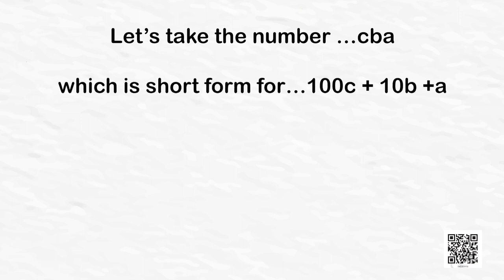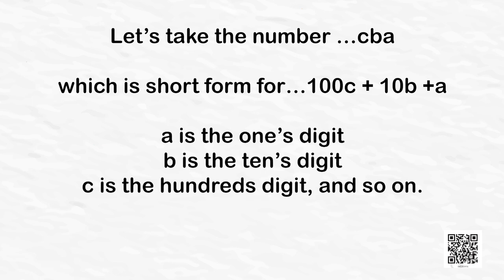Let's take the number ...CBA, which is a short form for ...100C + 10B + A. Here A is the ones digit, B is the tens digit, and C is the hundreds digit and so on. The dots indicate there may be more digits to the left of C. Since 10, 100, and so on are divisible by 10, clearly 10B, 100C and so on are also divisible by 10. So as far as A is concerned, A must be divisible by 10 if the number is divisible by 10, and this is possible only when A = 0. Hence a number is divisible by 10 only when its ones digit is 0.